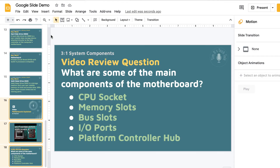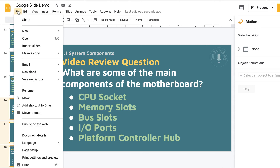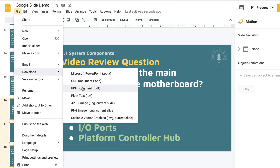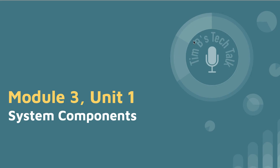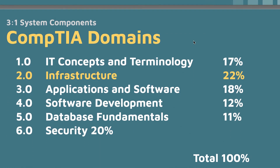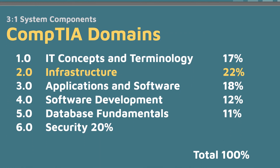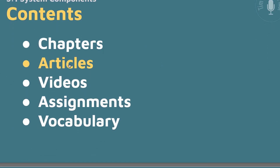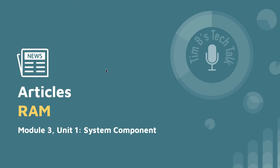Another really cool feature is how hyperlinks are preserved when you save your presentations to PDFs. This is great when you want to give your students a resource to refer to that includes material covered in class. You just go to Download, choose PDF, and download the document. When you're viewing your PDF in a browser, you'll notice that all the hyperlinks have been preserved — for example, this link attached to 'Articles' takes me to the articles page.